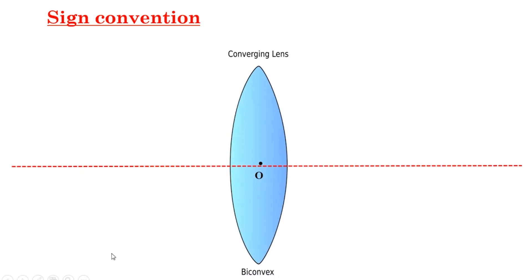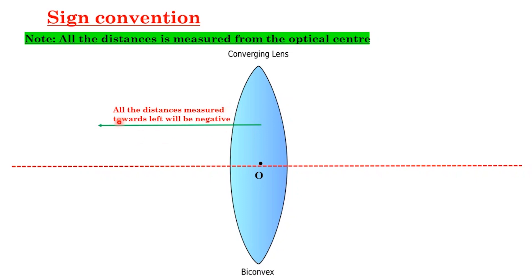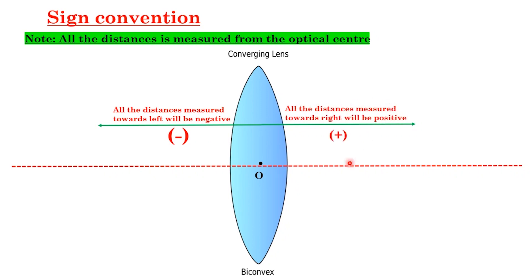Suppose we have a lens. It has two parts — a left portion and a right portion. All distances will be measured from the optical center. Distances measured towards the left from the lens will be negative, and all distances measured towards the right will be positive.